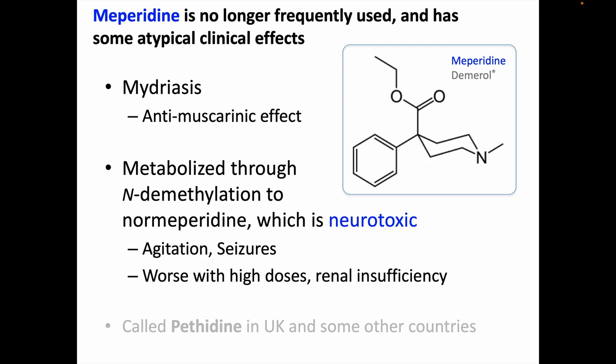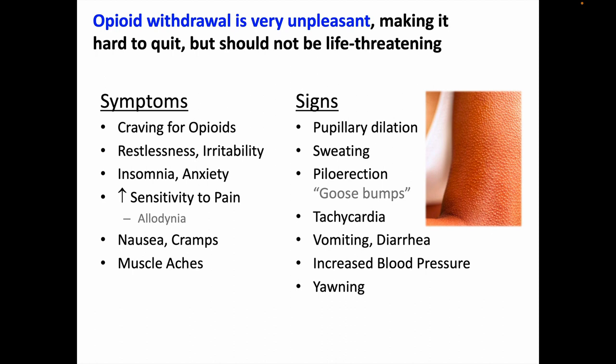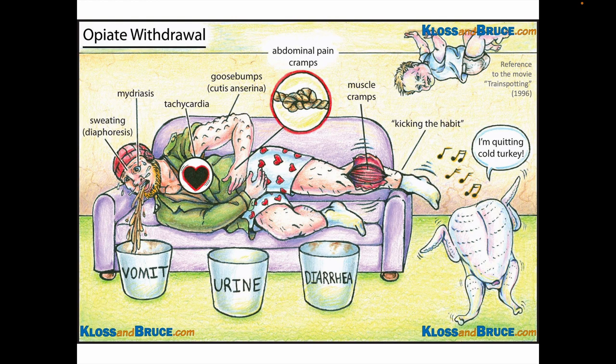If opioid-dependent patients stop or sufficiently reduce their intake, they can experience withdrawal. Opioid withdrawal is very unpleasant, which makes opioids hard to quit because redosing is an easy way to fix it. But barring some other complication, opioid withdrawal should not be life-threatening. I've listed here the expected signs and symptoms, which you can read through at your leisure. Or maybe you'll like this graphic mnemonic flashcard better. There is one thing on this card that probably needs some extra explanation — the baby crawling on the ceiling. This is supposed to represent a famous scene from the 1996 movie Trainspotting, in which Ewan McGregor's character locks himself in a room to detox from heroin and hallucinates a baby on the ceiling. Hallucinations are not a regular feature of opioid withdrawal, but I can recommend the movie, and there are other scenes related to opioid use, overdose, and withdrawal that I think are good illustrations.